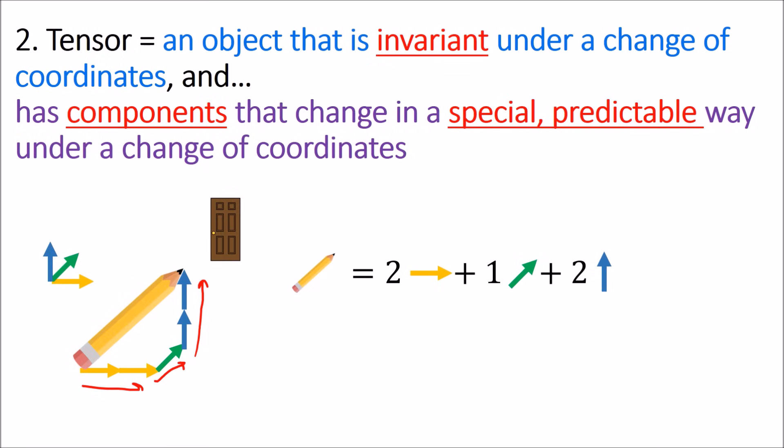So what we just did here by breaking down the pencil into the coordinate vectors is we measured the pencil's components. The components are just the amount of each coordinate vector that we need to construct the pencil. So, with this coordinate system, the components are 2, 1, 2.